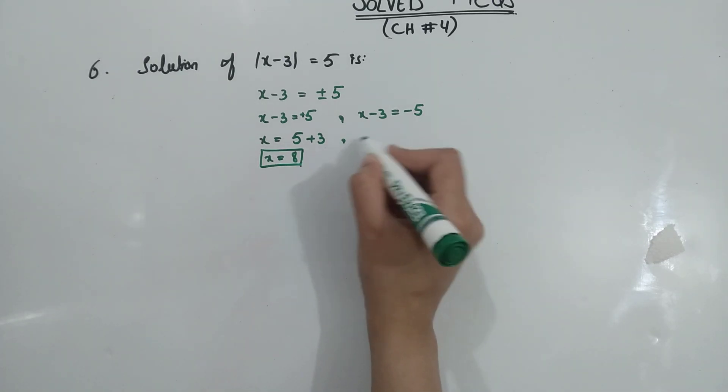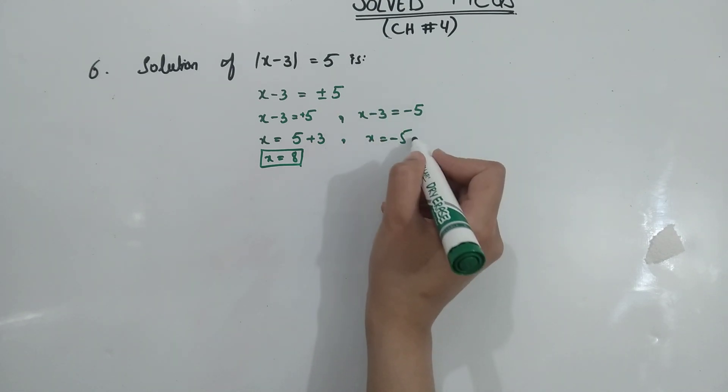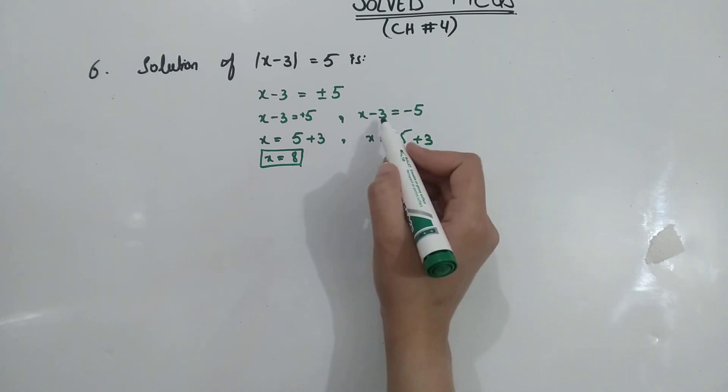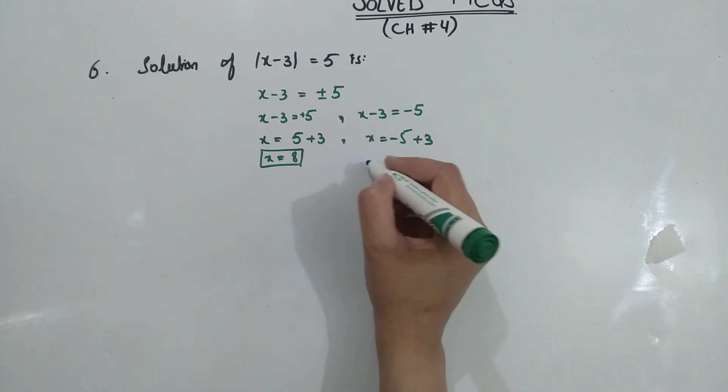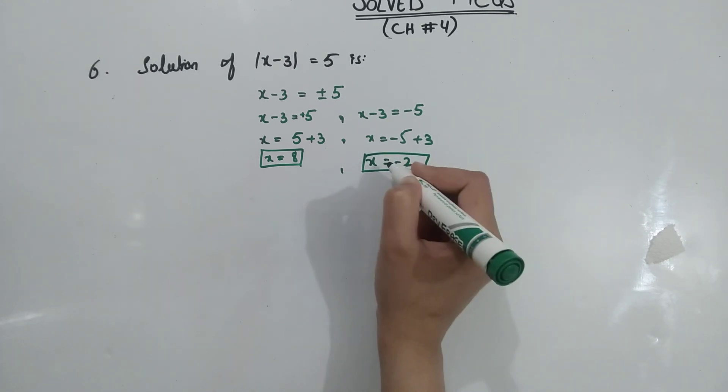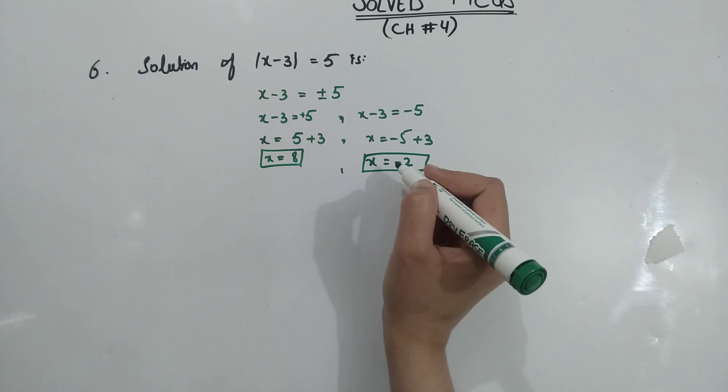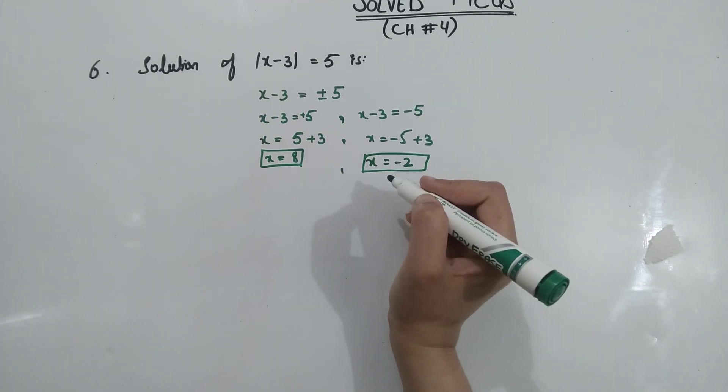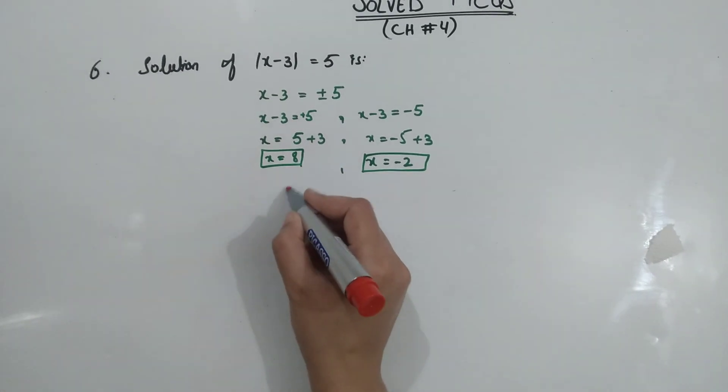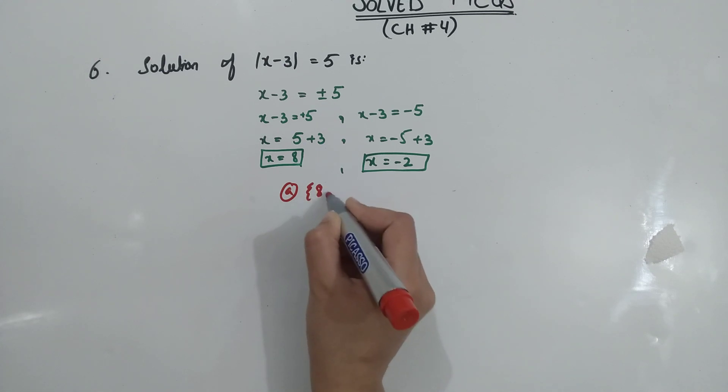And here we will write x equal to minus 5, and minus 3 at liberty where we will write plus 3, and this will be the second number. First one is 8, second is minus 2. These are 2 solutions. This answer is option a: {8, -2}.